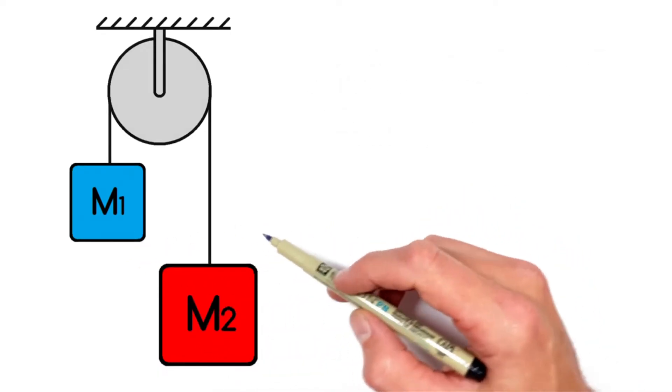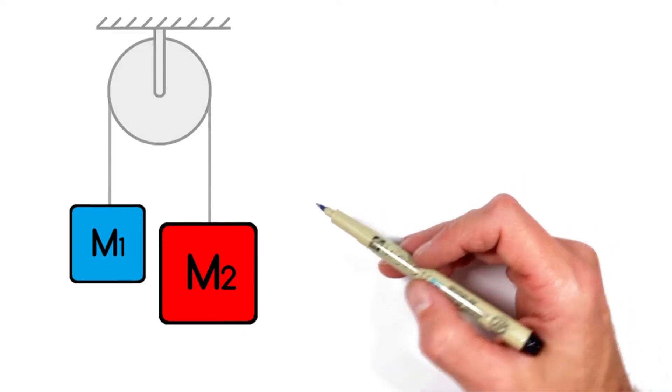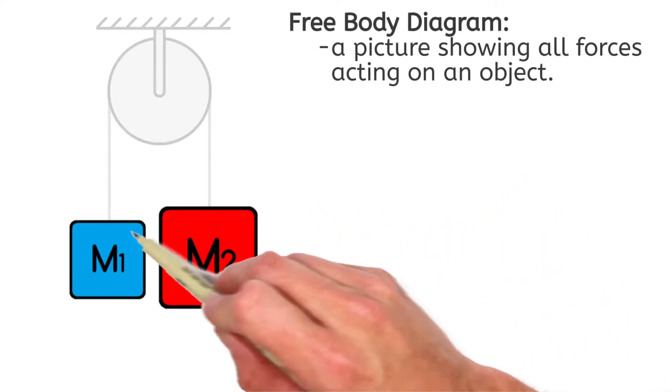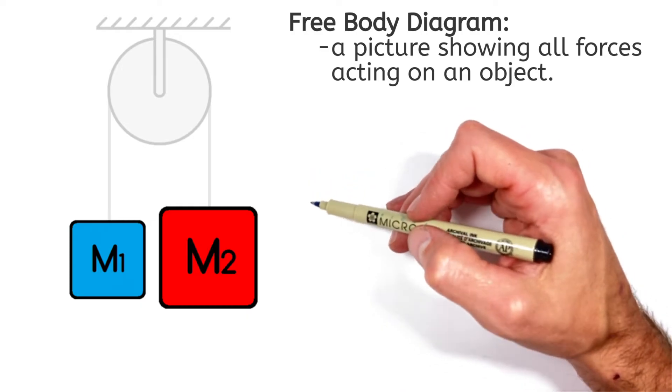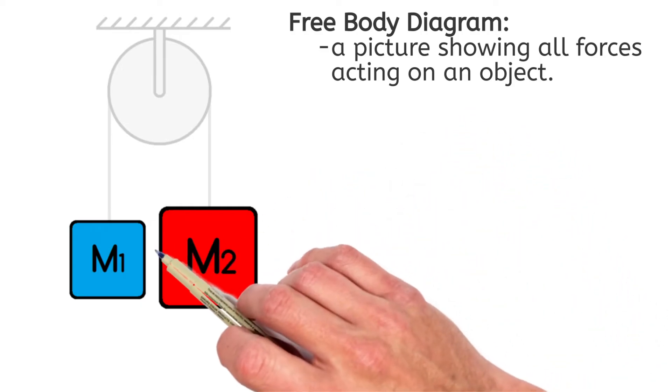Now in order to solve for the acceleration of each of these blocks, what we need to do is draw a free body diagram for each object. Now a free body diagram is nothing other than a picture showing all the forces acting on an individual object.